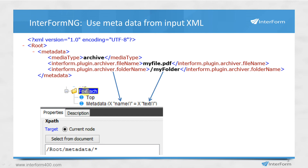In our template, we insert a for-each element, and that for-each refers to the path in the XML — so root/metadata — and then we go through all of the nodes inside of the metadata node. Here we're extracting, with the metadata element of the designer, the name of the current node. We extract that in the metadata element and update it with the value — the text that we found in the current node. Let me show you how that is actually implemented in the designer.